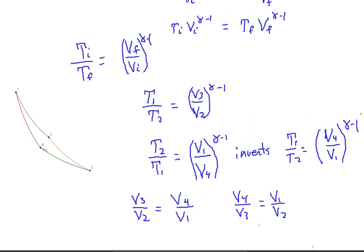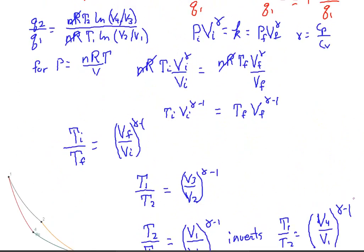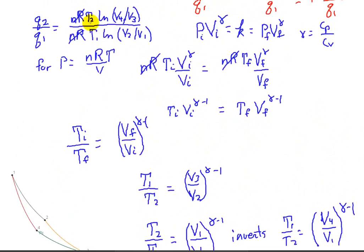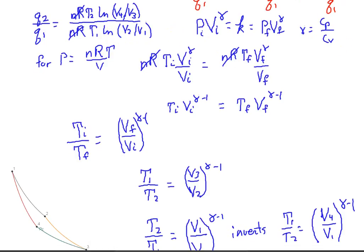So if we look back up here just a little bit, we initially had Q2 over Q1 being the log of V4 over V3 because of T2, and T1 times the log of V2 over V1. But down below, we had V4 over V3 equal to V1 over V2. Since these are logs, we can just invert this and get V1 over V2 and put a negative out in front of it.